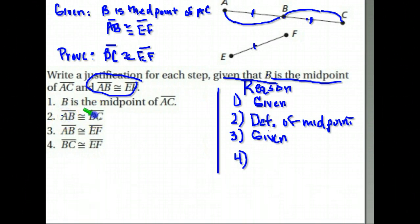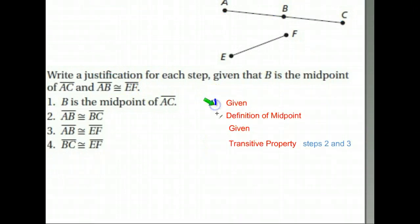And finally, on step four, how do we know that BC is congruent to EF? Well, we knew AB was congruent to BC from up above, and AB was congruent to EF here. So what's our reason? Let's take a look at our nice cleaned up version. Here's one, two, three. Our fourth reason: that's our transitive property.